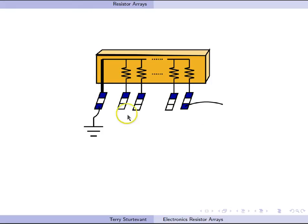Here we have the common pin, in this case, connected to ground, and some of the other resistors are connected to something else.